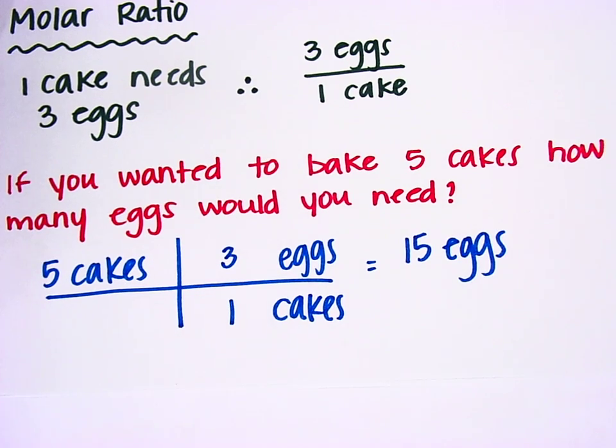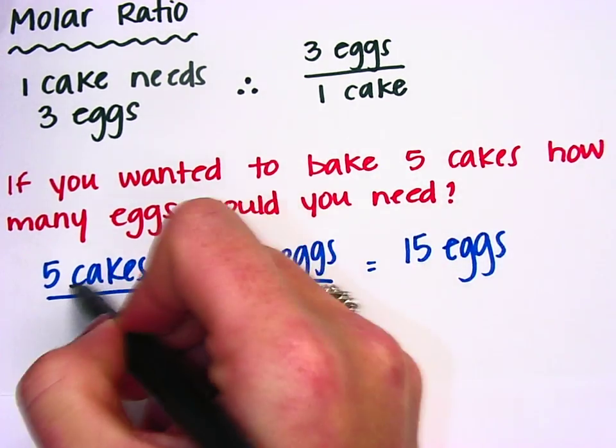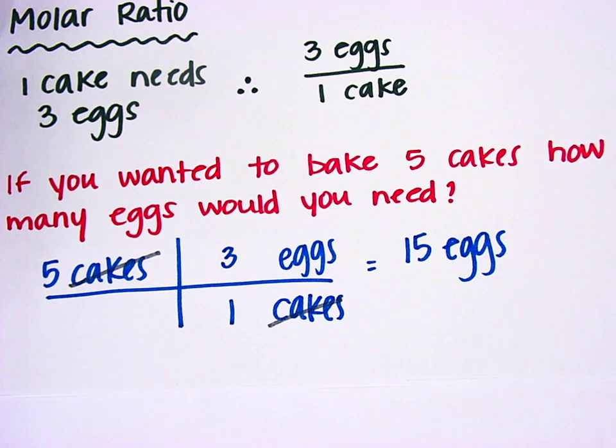You would want to make sure your units cancel out, and since you have cakes on the bottom and on the top, they do. So that's what molar ratio is, but now we're going to take that and put it in chemistry words.